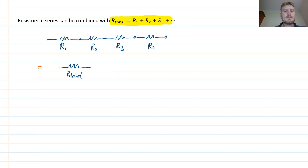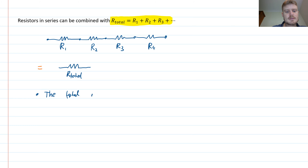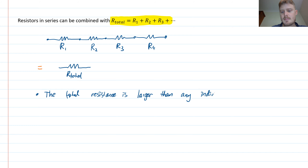That's a pretty simple rule, but one you need to memorize. You need to recognize this pattern — when you see resistors connected together in a chain, you can combine them into a single resistance which is just the sum of the individual resistances. One useful thing to understand: the total resistance is larger than any individual resistor. When you connect resistors in series, the total resistance gets bigger. That's pattern number one — series.